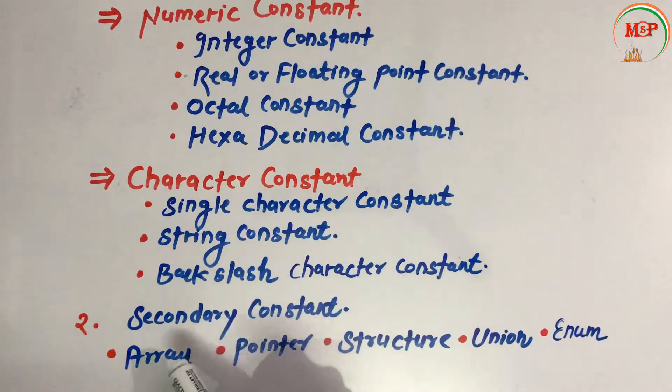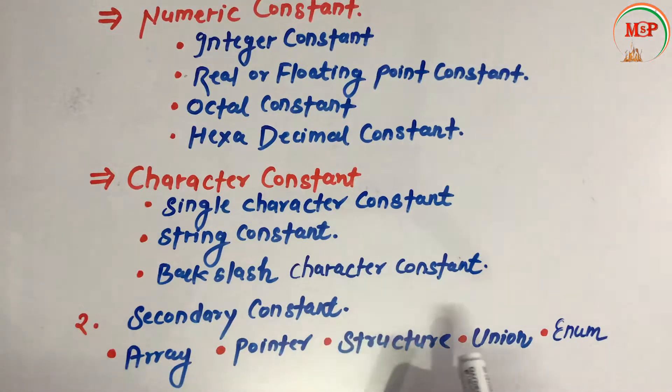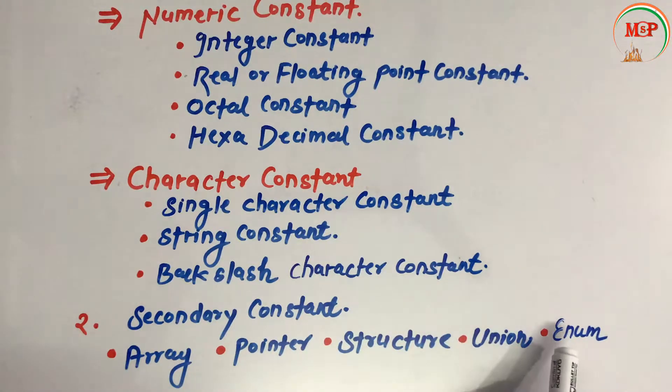The second one is secondary constant. Secondary constant is divided into: array, pointer, structure, union, and enumeration.